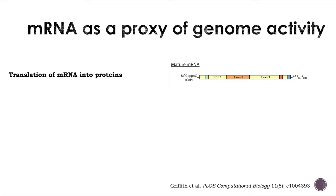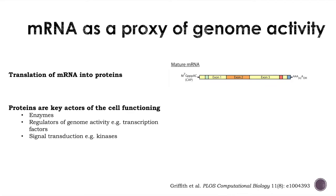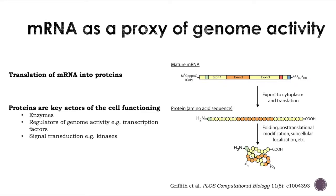This mRNA is finally translated into proteins by the translational machinery, which includes ribosomes and transfer RNAs. These proteins are the key actors of cell functioning. They can be enzymes that convert substrates into products — for instance, cleaving sucrose into glucose and fructose — regulators of genome activity such as transcription factors, or involved in signal transduction such as kinases involved in hormone perception. These mRNAs are exported to the cytoplasm for translation, and the protein is then modified at the post-translational level, localized, and so on.